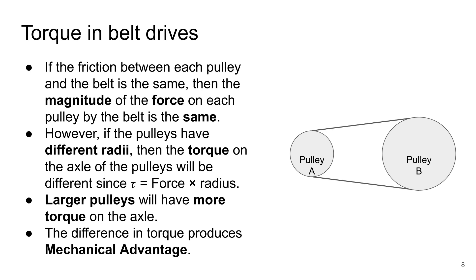We are now going to look at torque in belt drives. If the friction between each pulley and the belt is the same, then the magnitude of the force on each pulley by the belt is the same. The force that pulley A exerts on the belt is the same as the force that the belt exerts on pulley B. However, because pulley A and pulley B are different in size, they have different radii. Therefore, the torque on the axle of the pulleys will be different, since torque equals force times the radius. Larger pulleys will have more torque on the axle, and this difference in torque produces mechanical advantage.